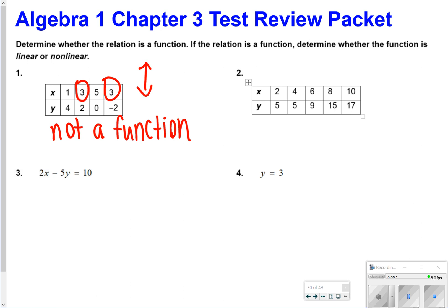For number 2, that one is a function, and then the function is non-linear. Let me explain why that is non-linear, because the directions say determine whether the function is linear or non-linear, if it is a function. Here, we have each input, one input, one output, but the numbers up here go up by twos, but down here we have plus 0, plus 4, plus 6, plus 2, so this one, it's not linear because there's no constant rate of change.